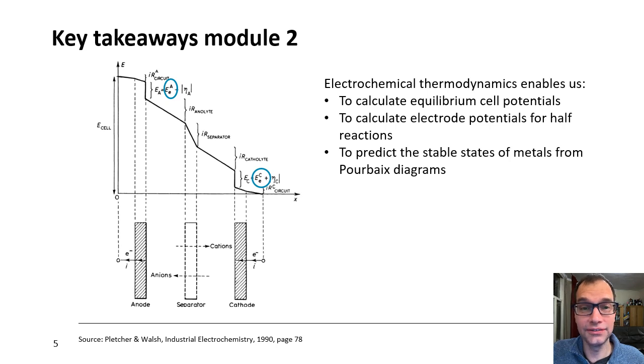Well, that brings us to the end of the last screencast on electrochemical thermodynamics. Just to summarize the key takeaway from the three screencasts. So, what can we do? We can use electrochemical thermodynamics to determine equilibrium cell potentials. We can calculate electrode potentials for half-reactions. And we can predict the stable state of metals from Pourbaix diagrams. Those are the three things I would like you to remember. And with that, I would like to thank you for your attention. And I hope to see you back in one of the other modules.